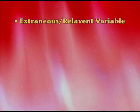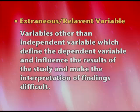Third is the extraneous variable. This is a very irrelevant variable — variables other than the IV that have an impact on the research and will spoil it. The basic idea is to control these variables so that the IV has a better impact on the DV. Variables other than the IV which influence the results of the study and make the interpretation of findings difficult must obviously be controlled.